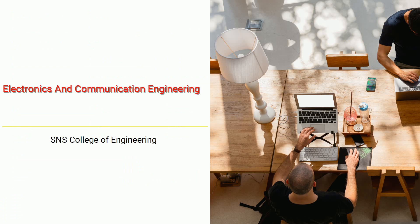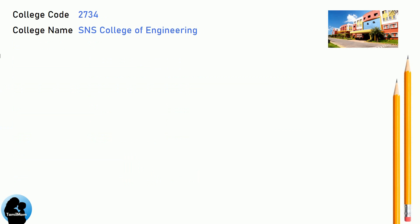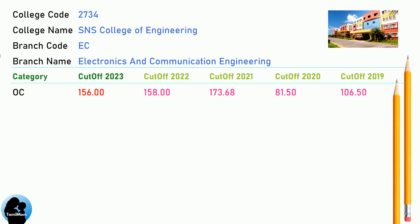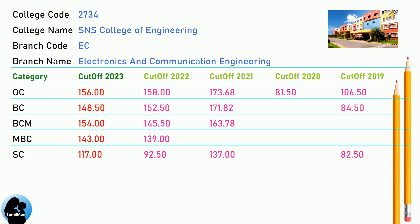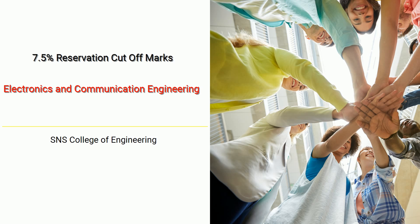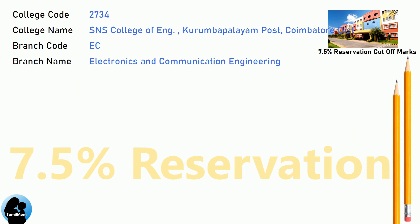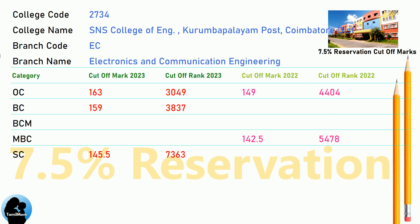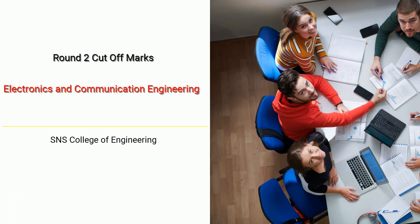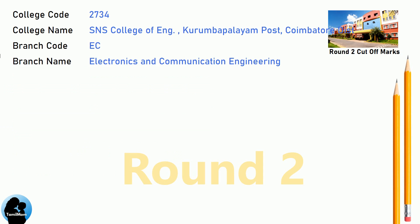DNA Cut-off for ASNS College of Engineering in Electronics and Communication Engineering. DNA 7.5 Reservation Cut-off for ASNS College of Engineering in Electronics and Communication Engineering. DNA Round 1 Cut-off for ASNS College of Engineering in Electronics and Communication Engineering.